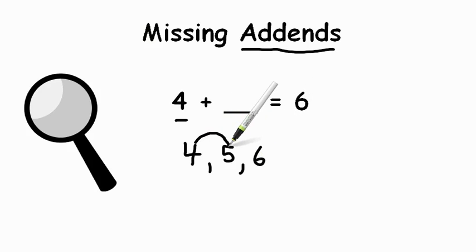So I did one hop, two hops, so my total is two. So four plus two equals six.